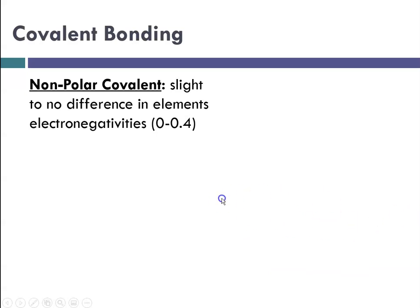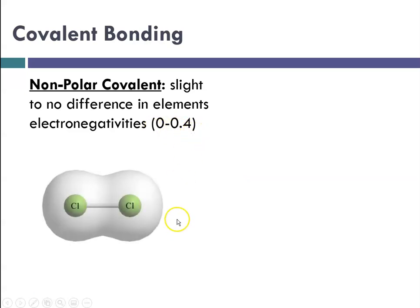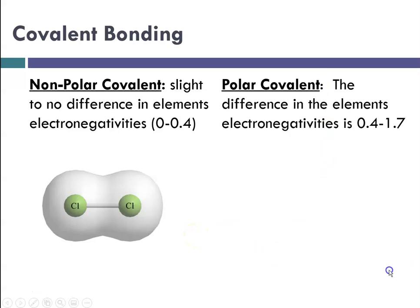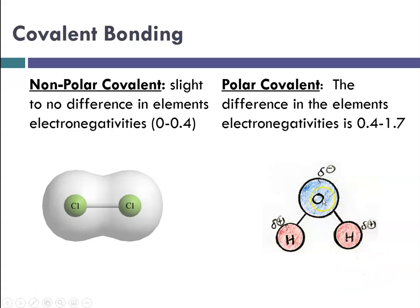For nonpolar covalent bonds, there is slight to no difference in electronegativity — between 0 and 0.4. A purely nonpolar covalent bond occurs in atoms bonded to themselves, so the difference is exactly 0: chlorine with itself, hydrogen with itself, or oxygen with itself. For a polar covalent bond, the electronegativity difference falls between 0.4 and 1.7. In water, oxygen is more electronegative than hydrogen, so we use delta-minus and delta-plus to show electrons spending most of their time on oxygen and very little on hydrogen.